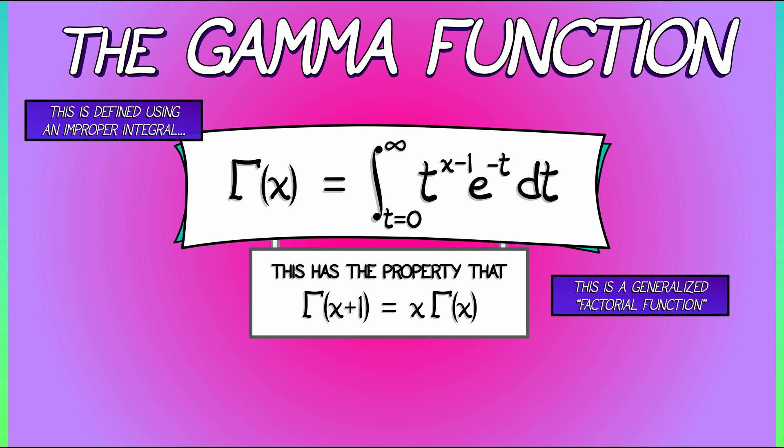n plus 1 factorial is really n plus 1 times n factorial. Yes. And because gamma of 1 is 1, what we get in the end is like a shifted factorial function. Gamma of n plus 1 is really n factorial for all positive integers n. But this function extends to all positive real numbers as well.